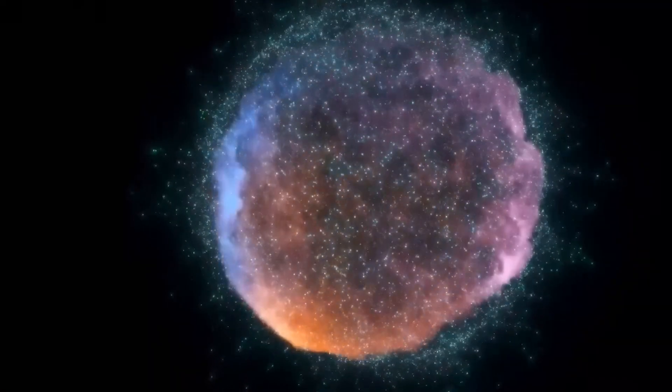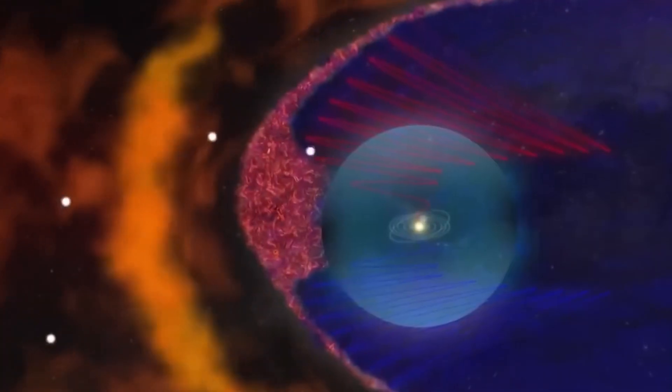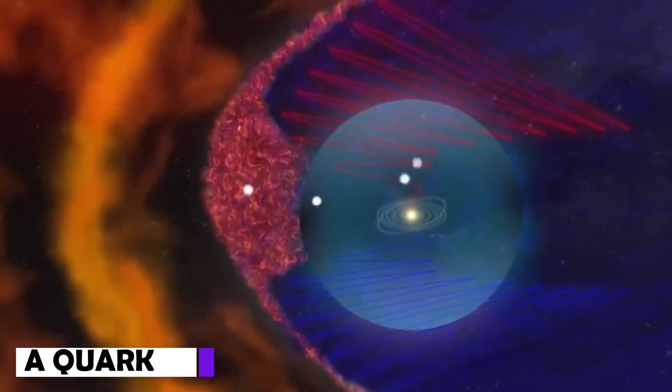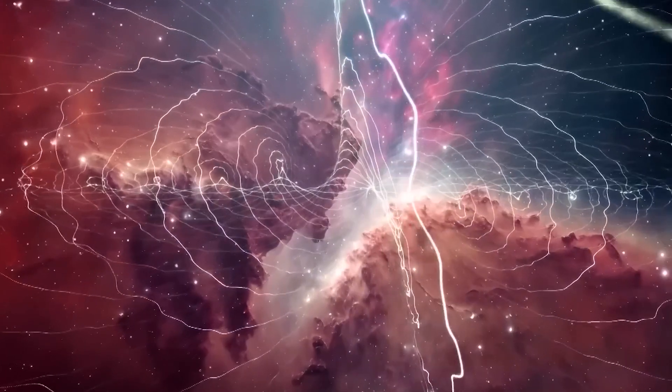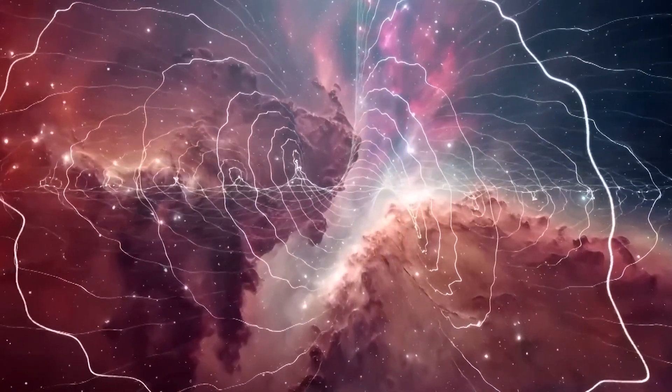Similar to how different violin strings produce different notes, these strings can oscillate at different frequencies. Every frequency has a corresponding particle, such as an electron, a quark, or a photon. These interactions between particles determine the behavior and characteristics of matter and forces.